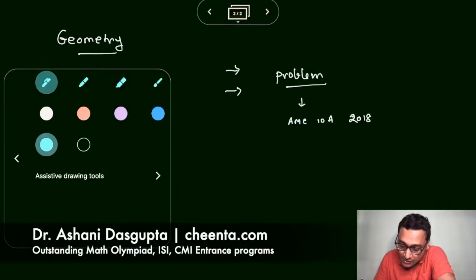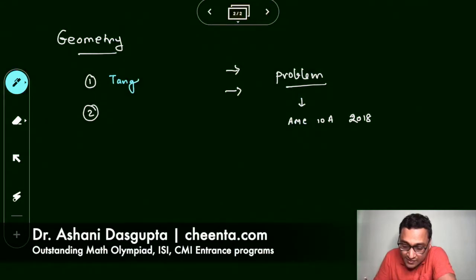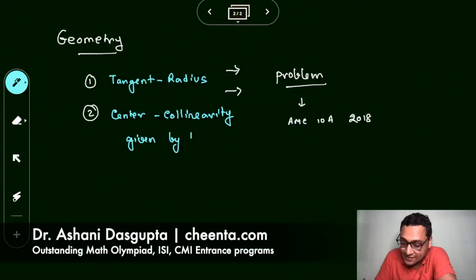What are these concepts? The first concept is really simple. It is possible that many of you know this - the tangent radius relation. And the second thing that we will learn is center collinearity given by tangency. It is a very simple idea but it is extremely useful when you solve problems.